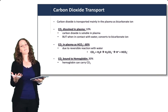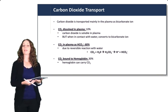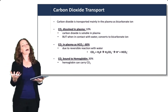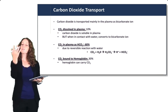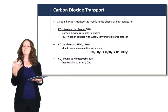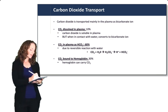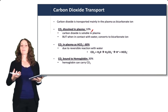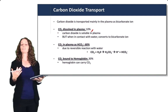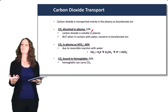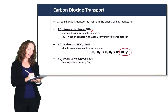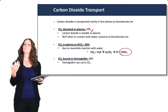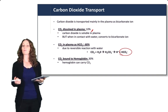Carbon dioxide is transported mainly in the plasma as bicarbonate ion. This is very different from oxygen, which is transported mainly bound to hemoglobin. CO2 dissolves well in the plasma — about 10% will be directly dissolved in the plasma as CO2. About 60% is going to react with water in the plasma and in the red blood cells to be carried as bicarbonate. The remaining 30% will be carried bound to hemoglobin.